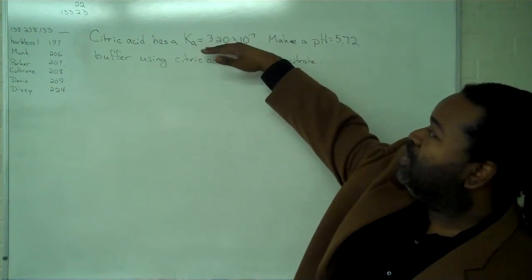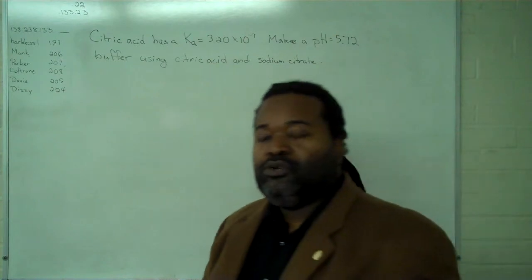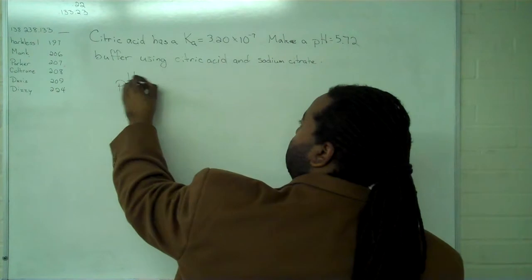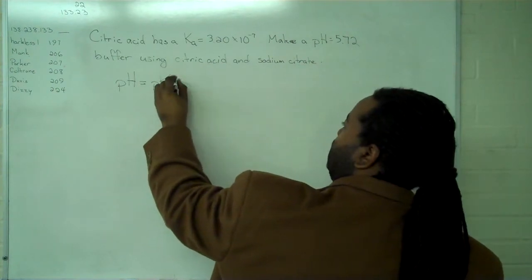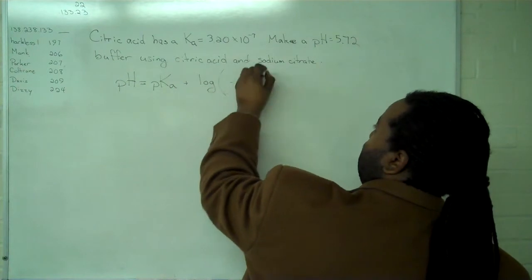And we have the Ka for citric acid and the target pH. With this information, we can write out the Henderson-Hasselbalch equation. pH equals pKa plus the log of the ratio between the two ions.